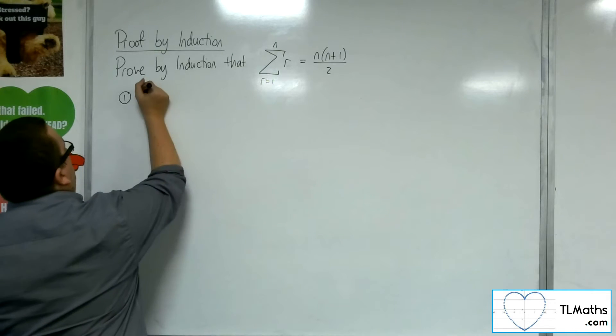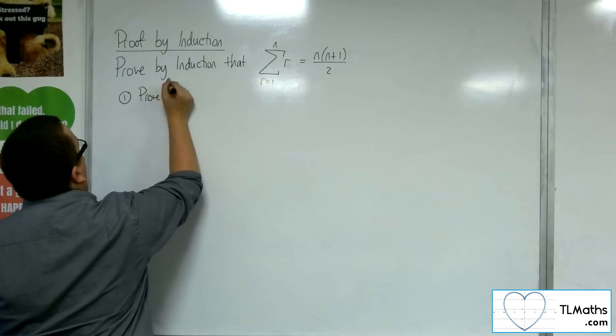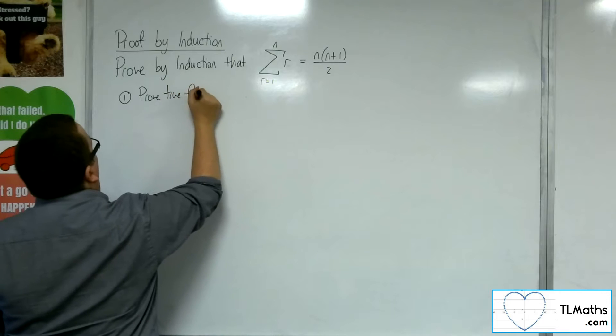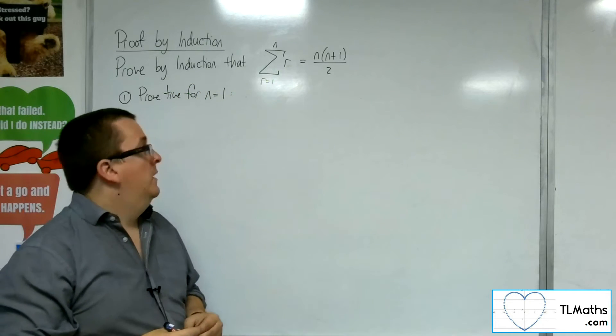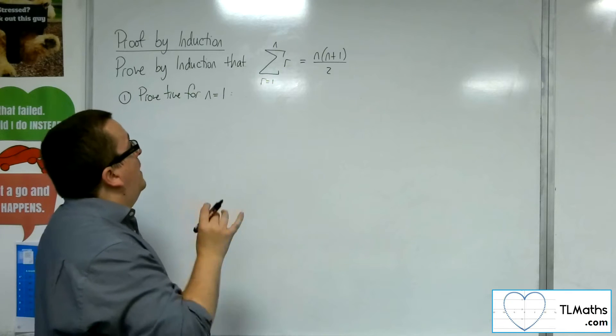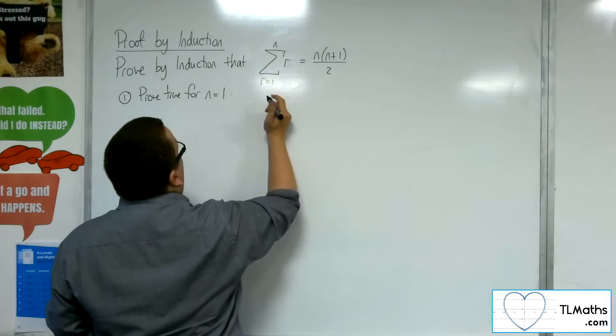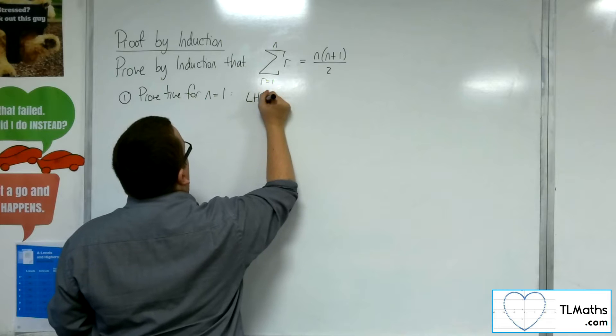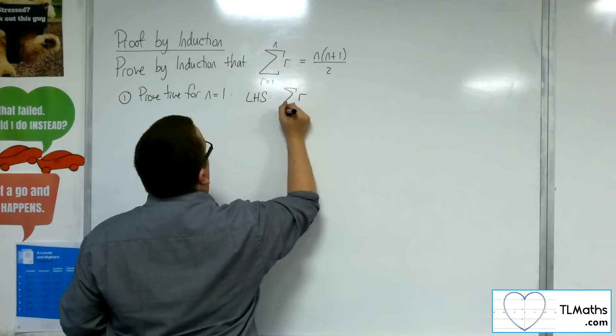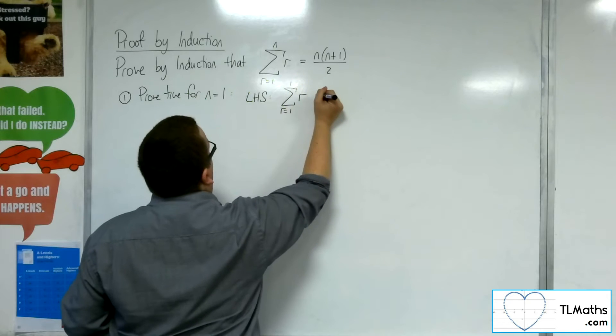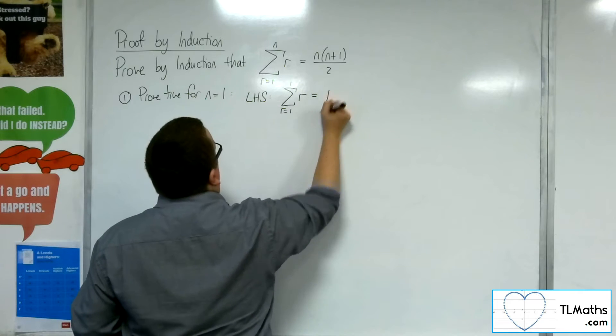So step number 1, prove true for n equals 1. That's what we need to do. So all we need to do here is substitute n is 1 into the left hand side. So the left hand side is the sum of r from r is 1 up to 1, which is just 1.